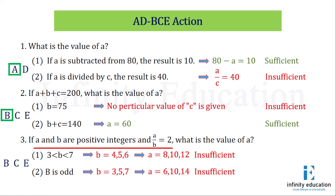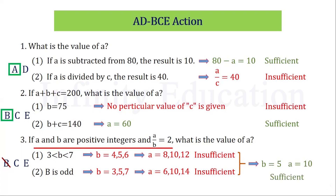When both statements are individually insufficient, we eliminate B and try them together — merging both statements. Keeping both conditions, 3 less than B less than 7 and B is odd, we get only one value for B, which is 5. Because B has to be a positive integer, B is between 3 and 7, and B is odd. So only one value for B, which is 5. Hence we get A equals 10, so it is sufficient. When together they are sufficient, C should be the answer to the question.